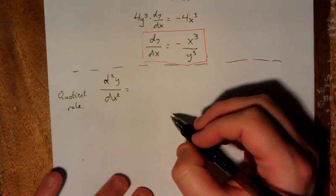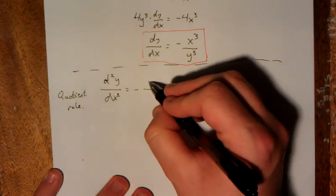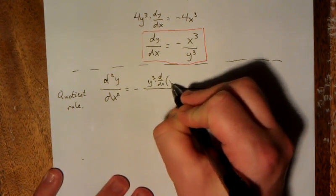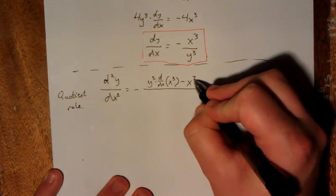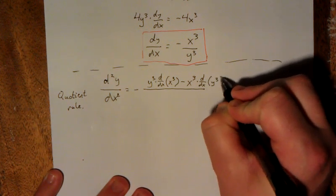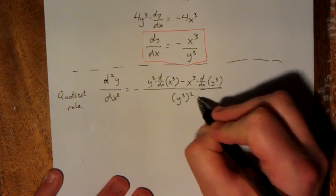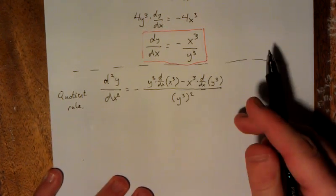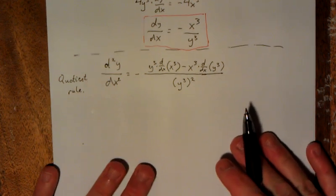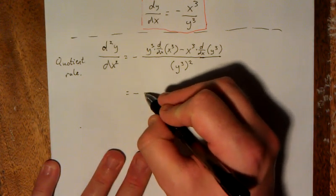So for the quotient rule, we'll keep that negative sign outside. I tell my class this is low d high less high d low over the square of what's below. Or when you say it in rhythm, low d high less high d low over the square of what's below. So that gives us our quotient rule, we have a couple more derivatives to evaluate here, keep our negative sign out front.